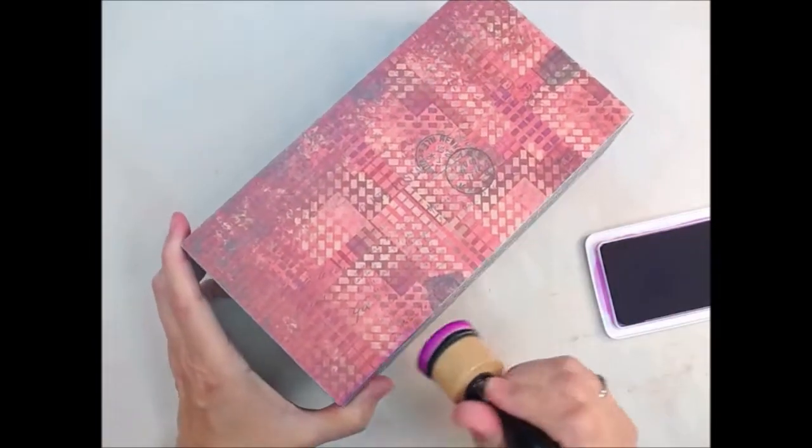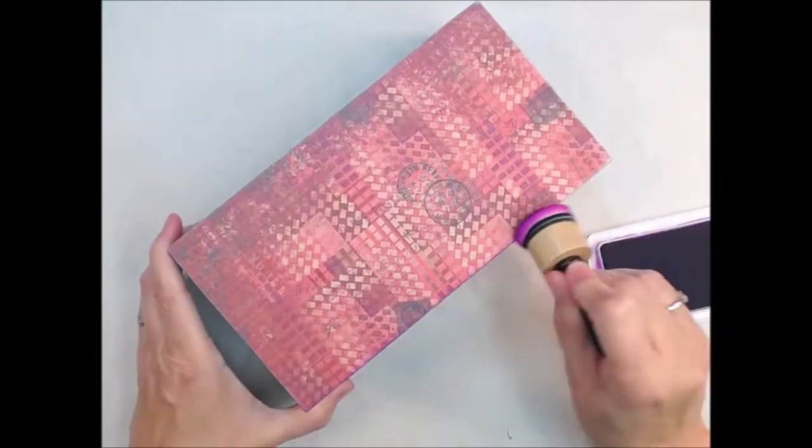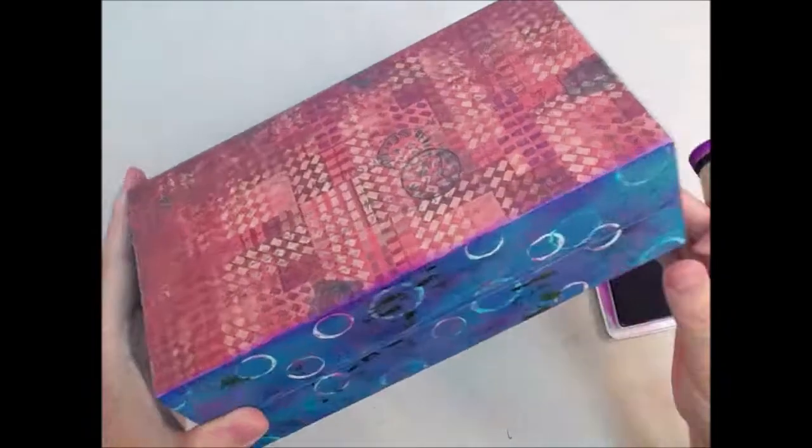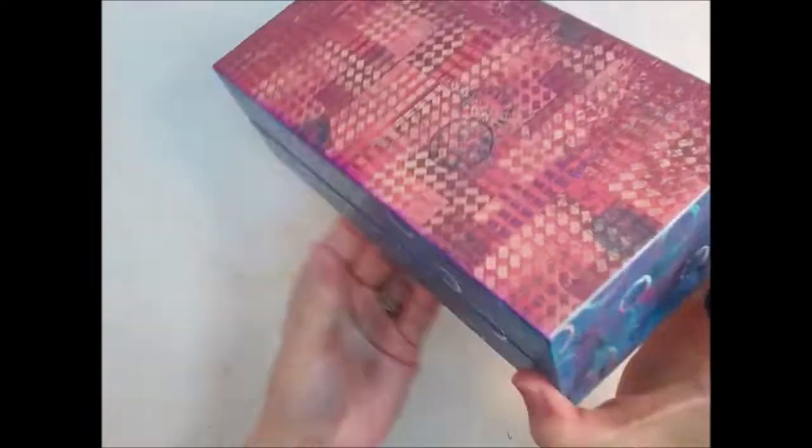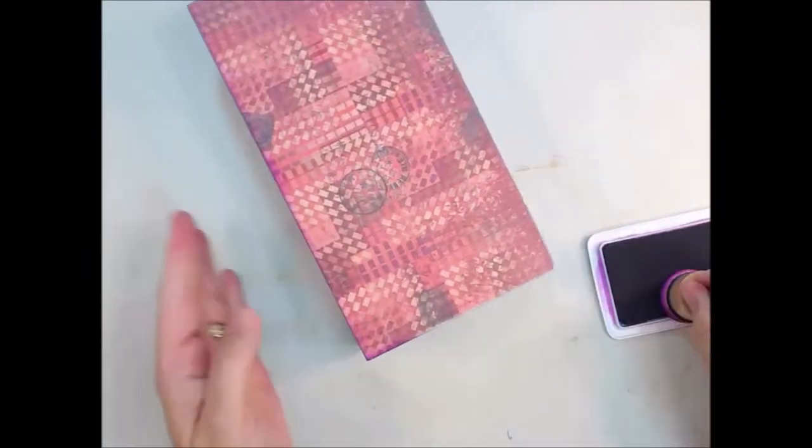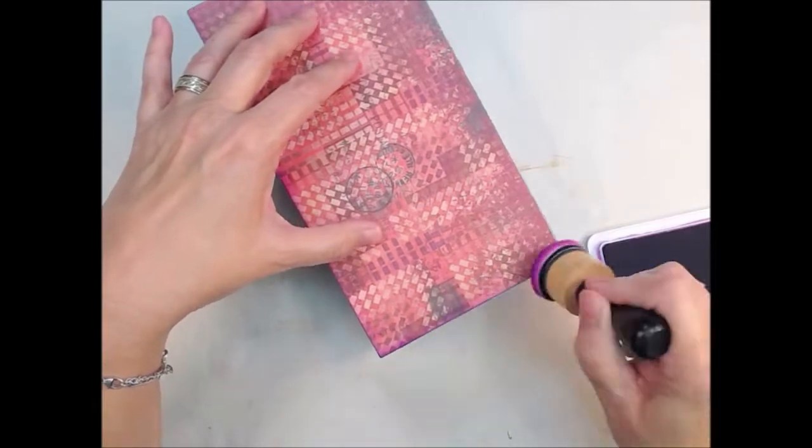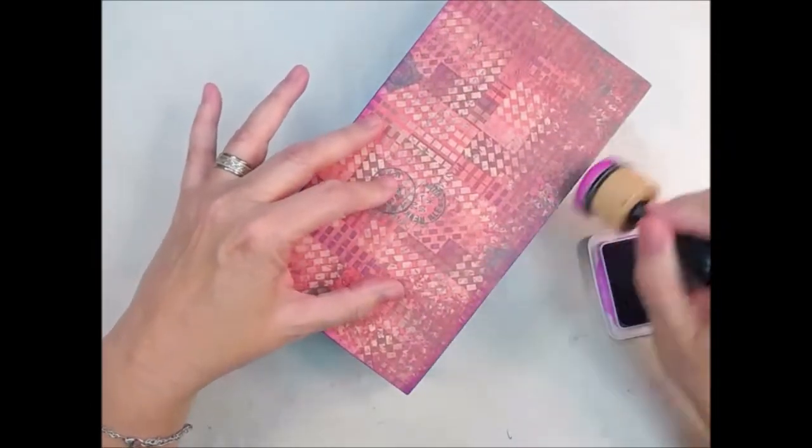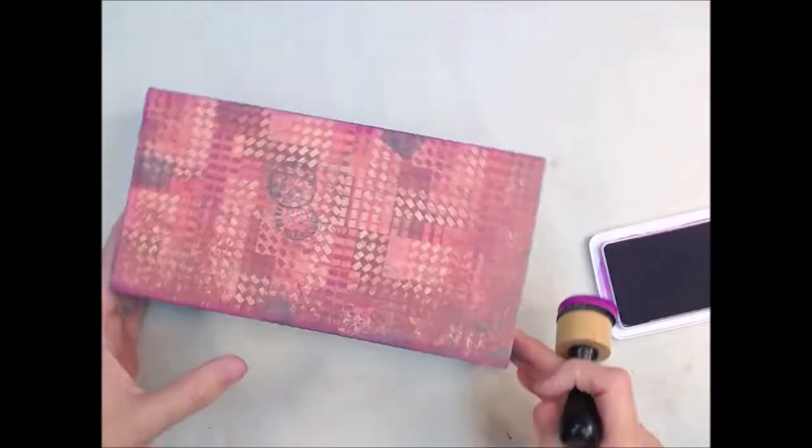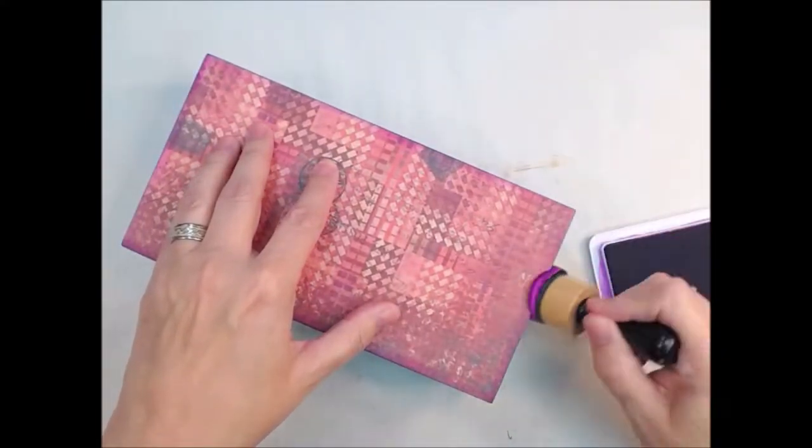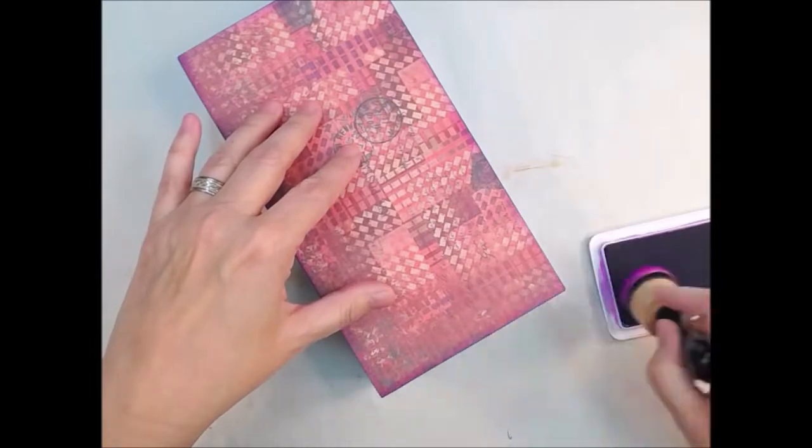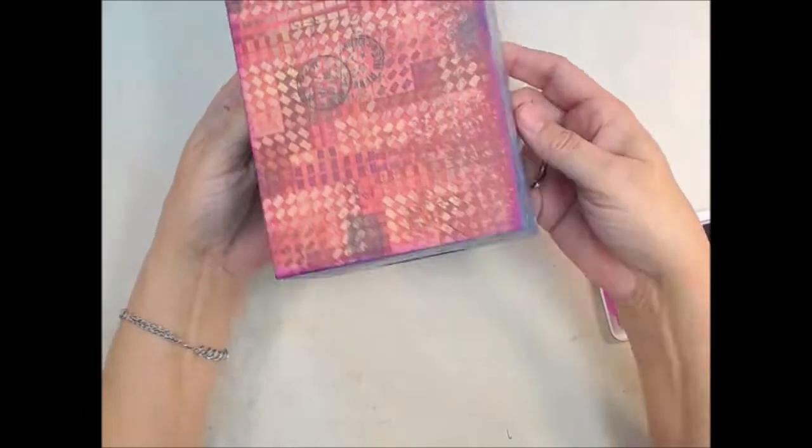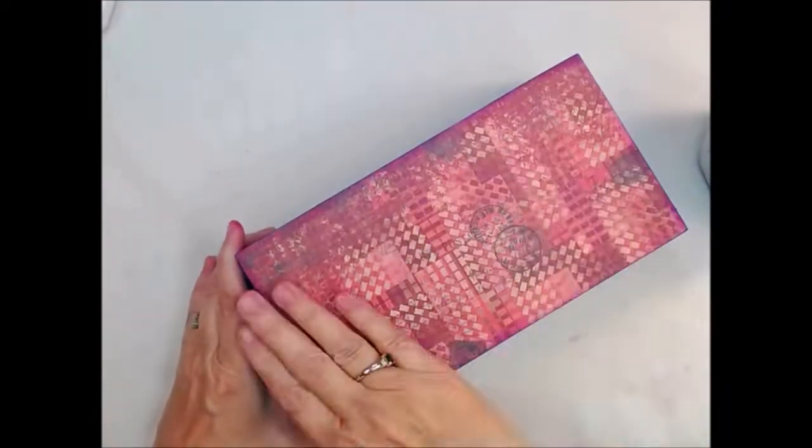Now we're going to ink the edges. I'm using purple because that's the color I want to pull out. I could have used black or brown or any other color, but I wanted to use purple. I'm going all around the edges. Once I get all four boxes done, I hit it with the heat gun because I want to make sure my ink is dry. Doesn't that look fun?